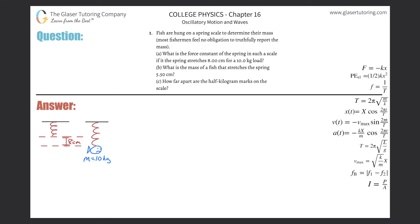Number one. Fish are hung on a spring scale to determine their mass. Most fishermen feel no obligation to truthfully report the mass — a little harsh for a textbook publisher. Letter A: what is the force constant of the spring in such a scale if the spring stretches eight centimeters for a 10 kilogram load?